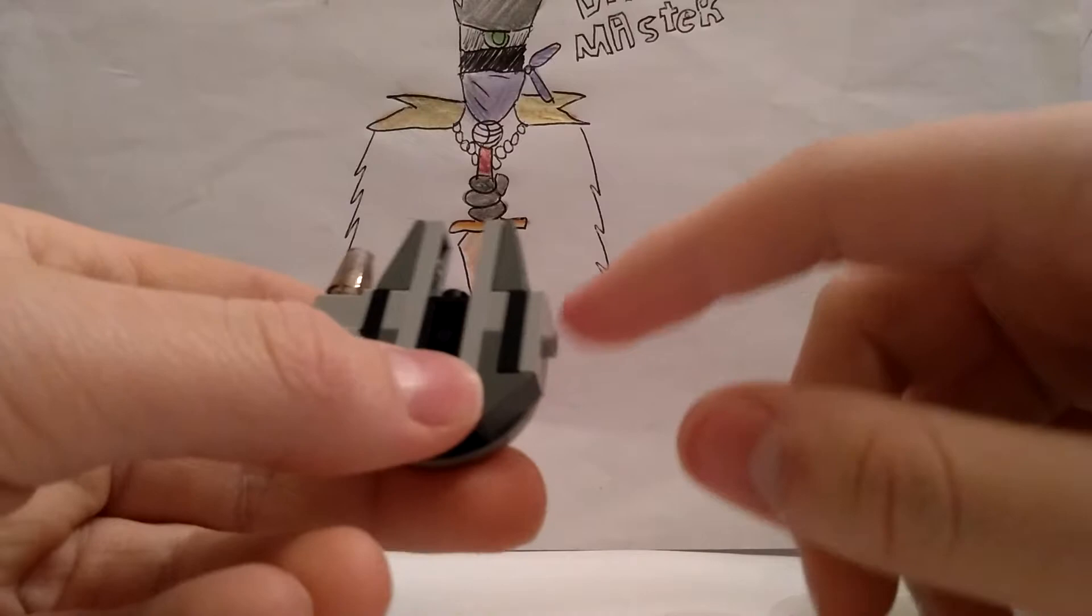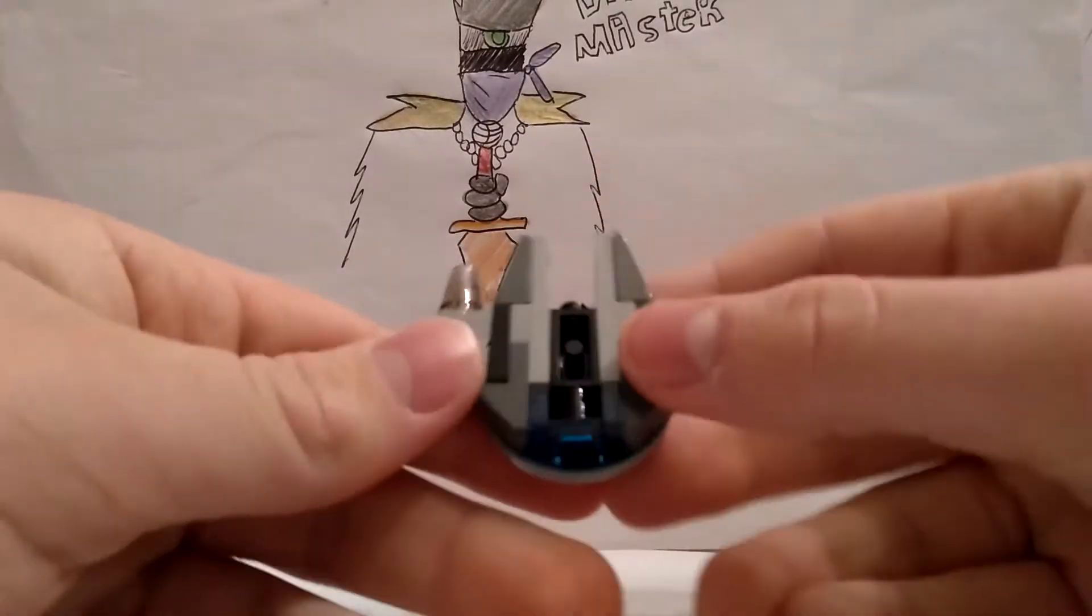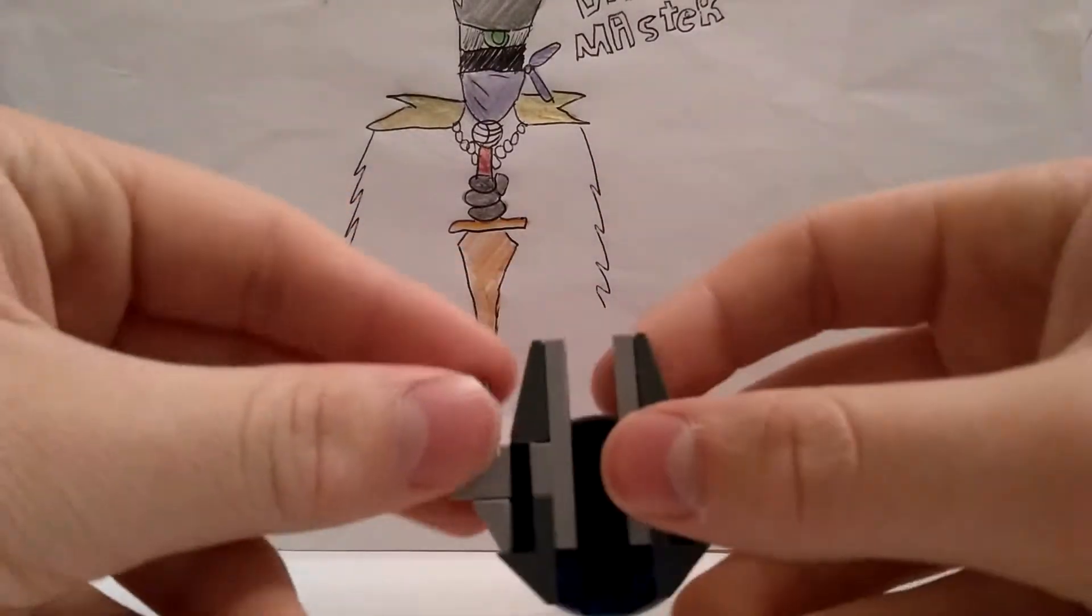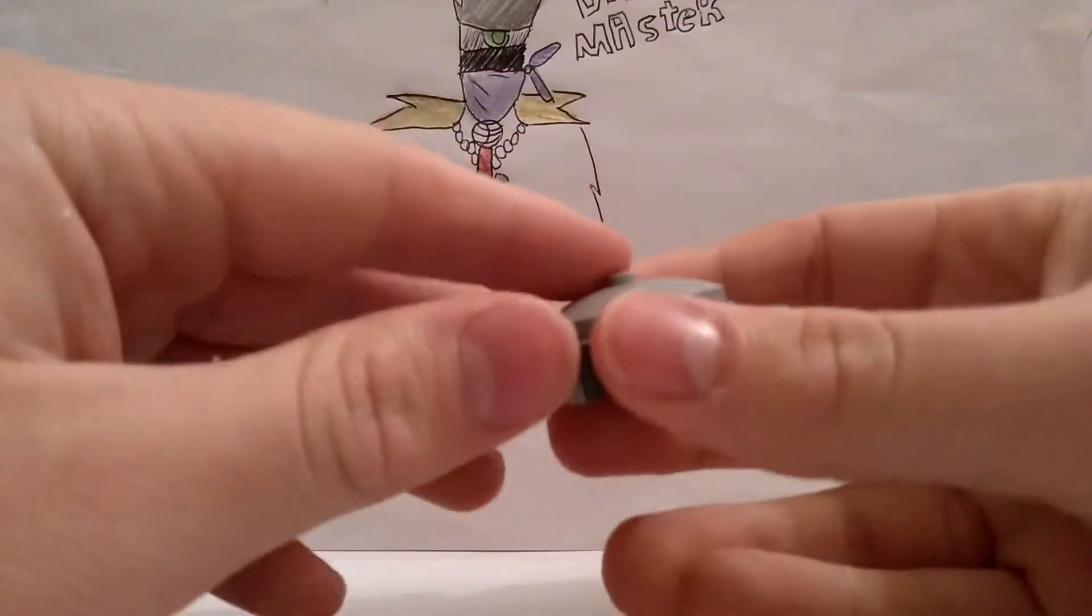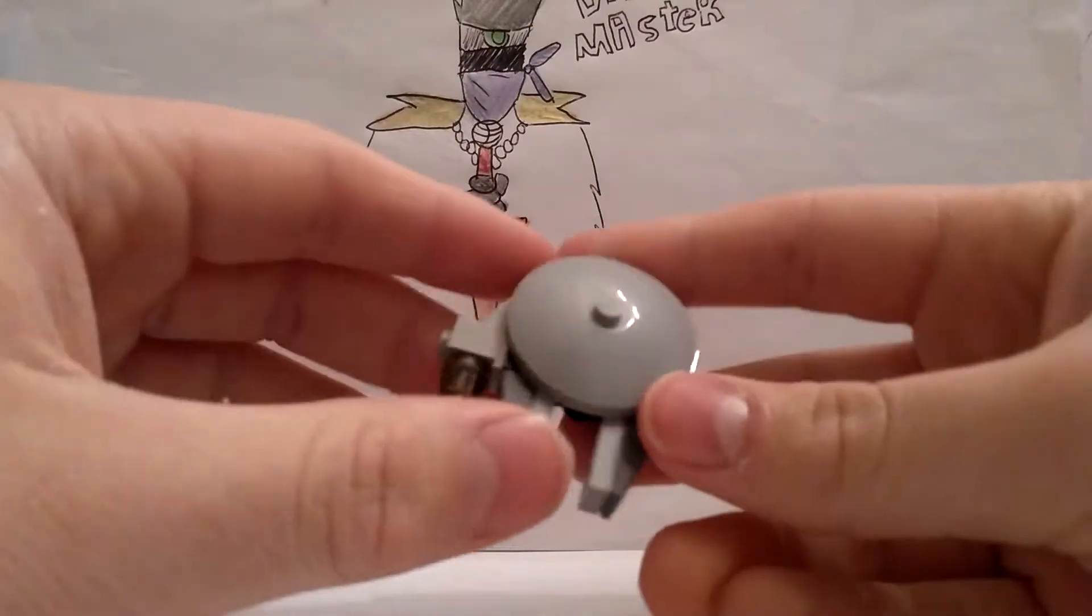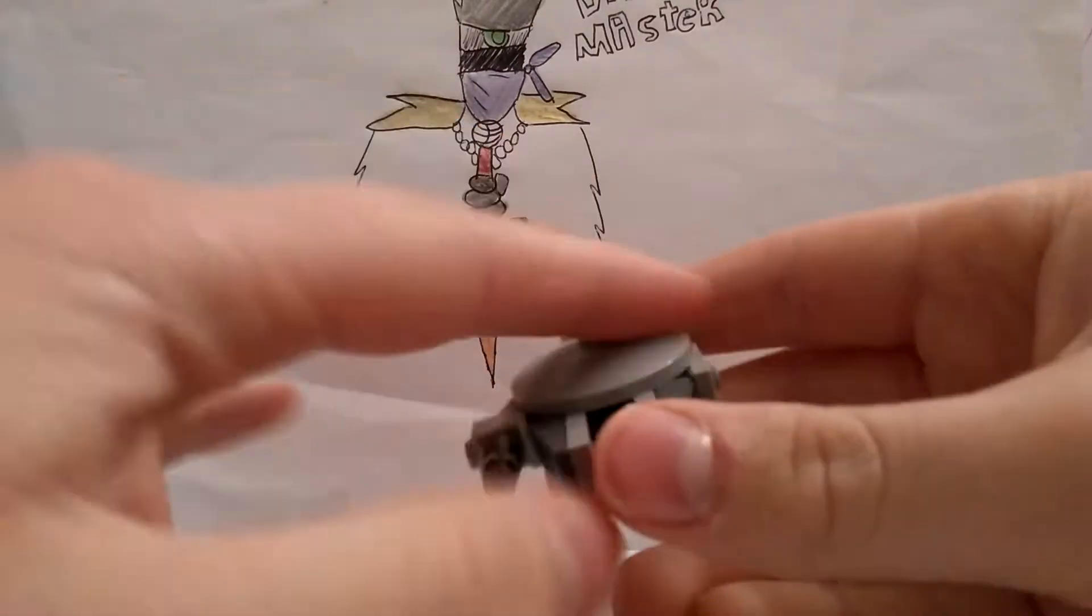This one has a 1x2 jumper plate. This one has a place to attach that weird cone thing. And flusters. It also has the dome piece.